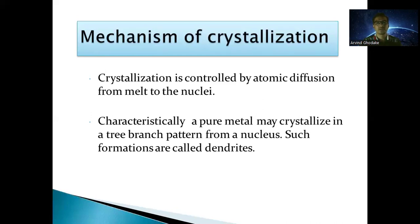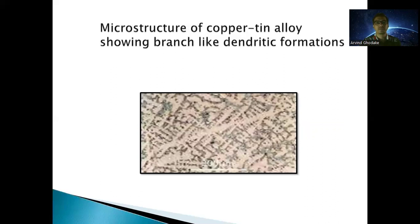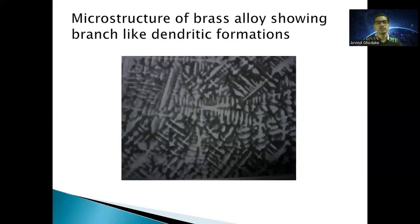Next is the mechanism of crystallization. Crystallization is controlled by atomic diffusion from the melt to the nuclei. Characteristically, a pure metal may crystallize in a tree-branch pattern from a nucleus — such a formation is called dendritic or dendrites. The microstructure of a copper-tin alloy shows branch-like dendritic formation, and the microstructure of a brass alloy also shows this branch-like dendritic structure.